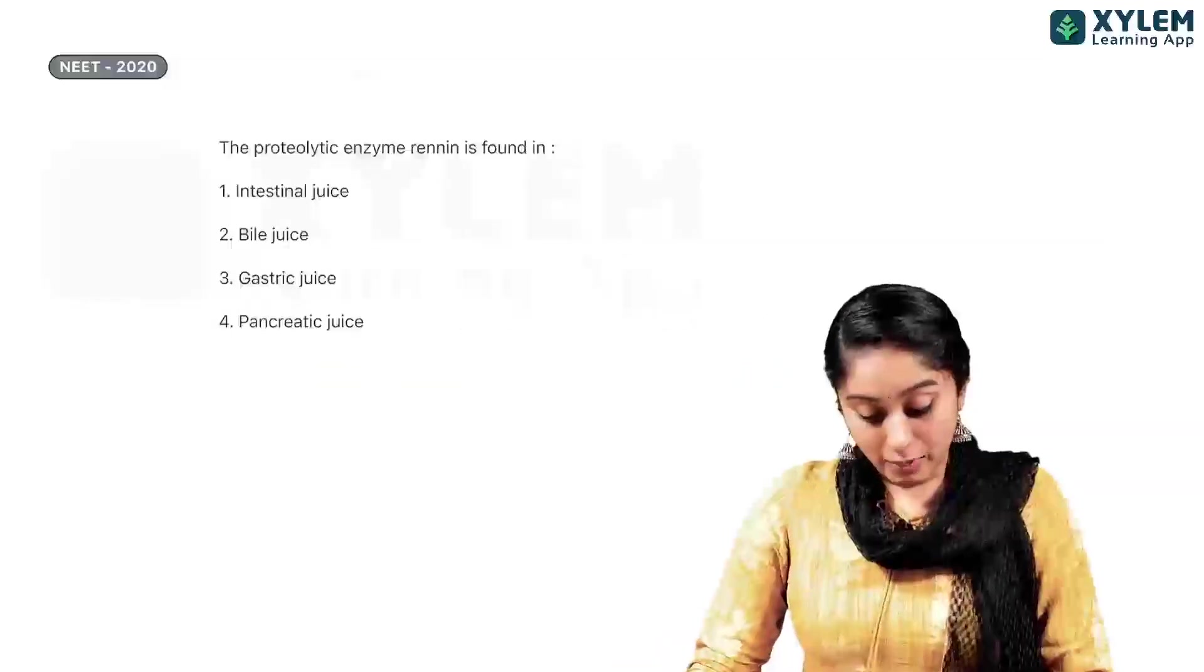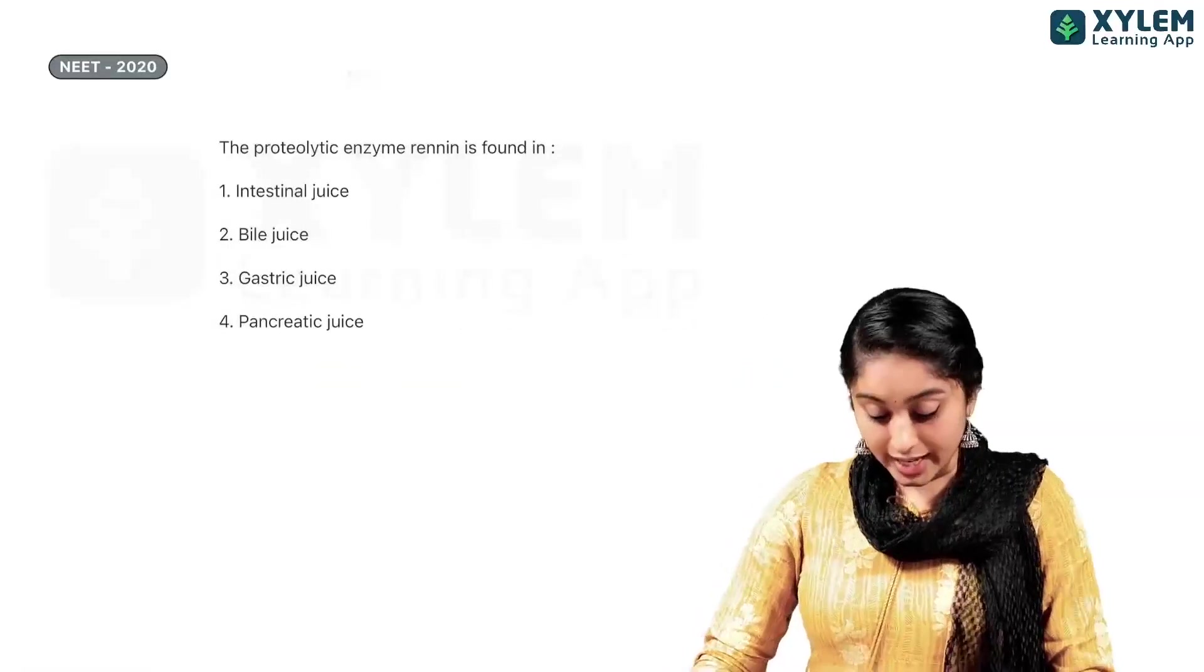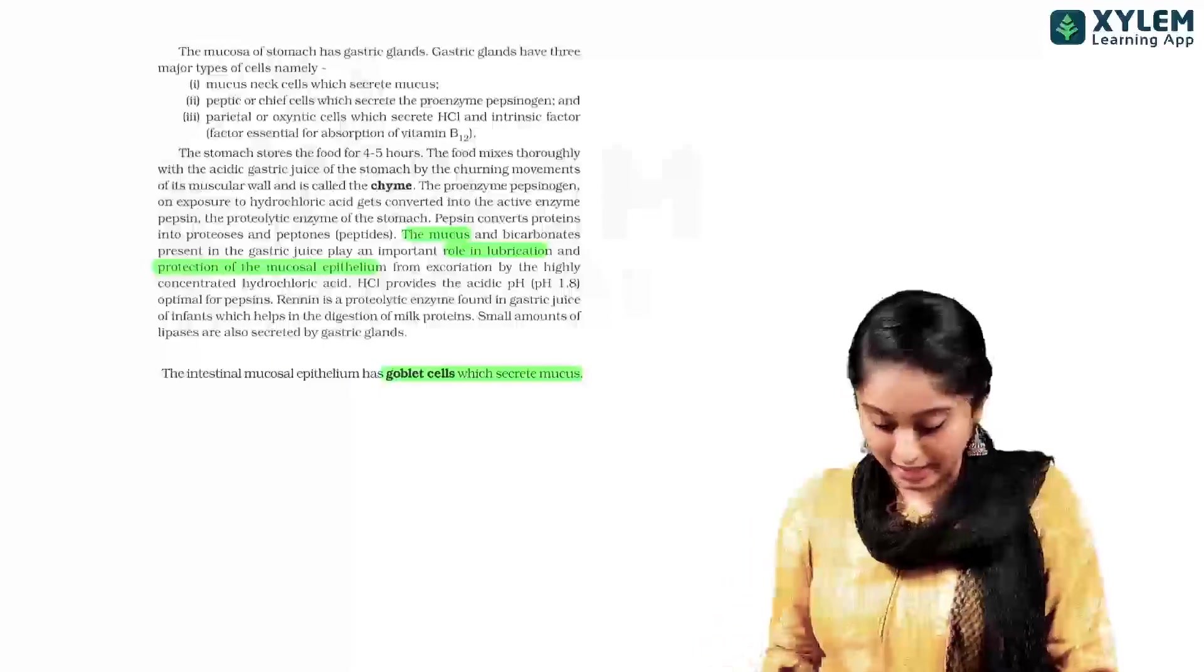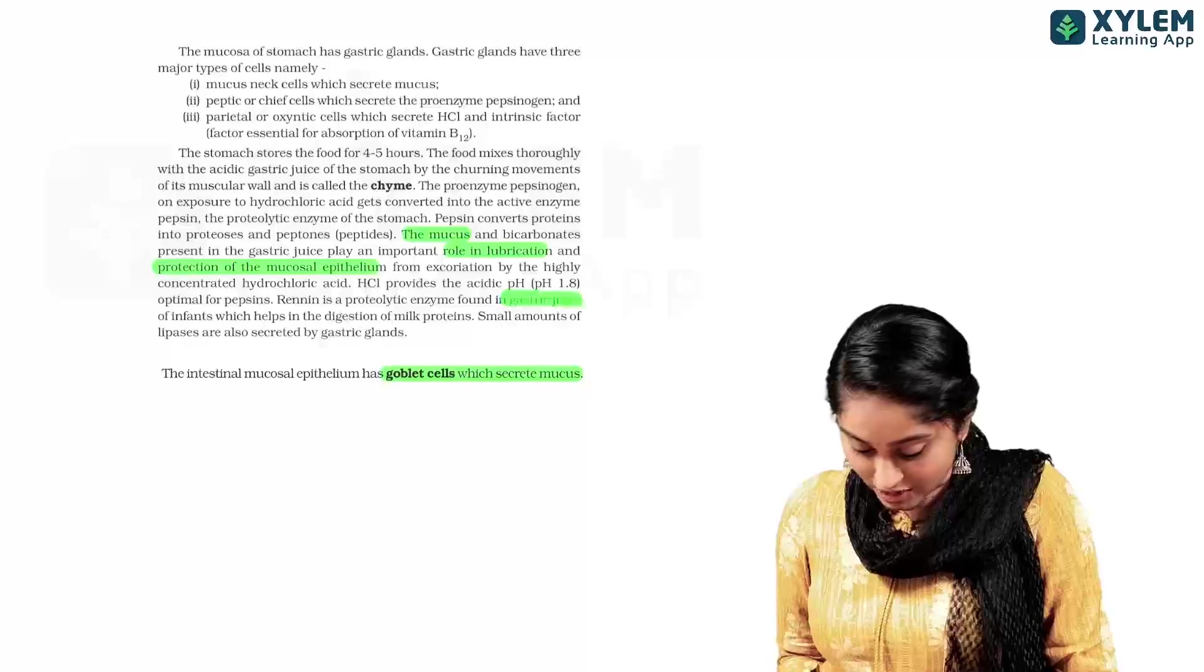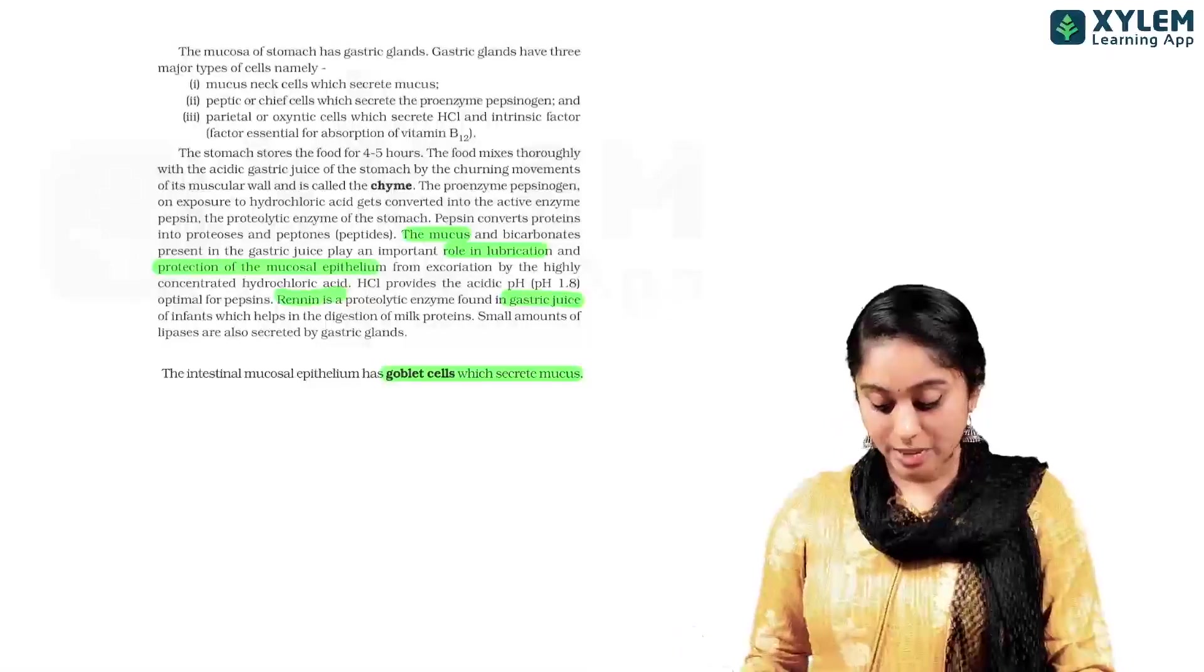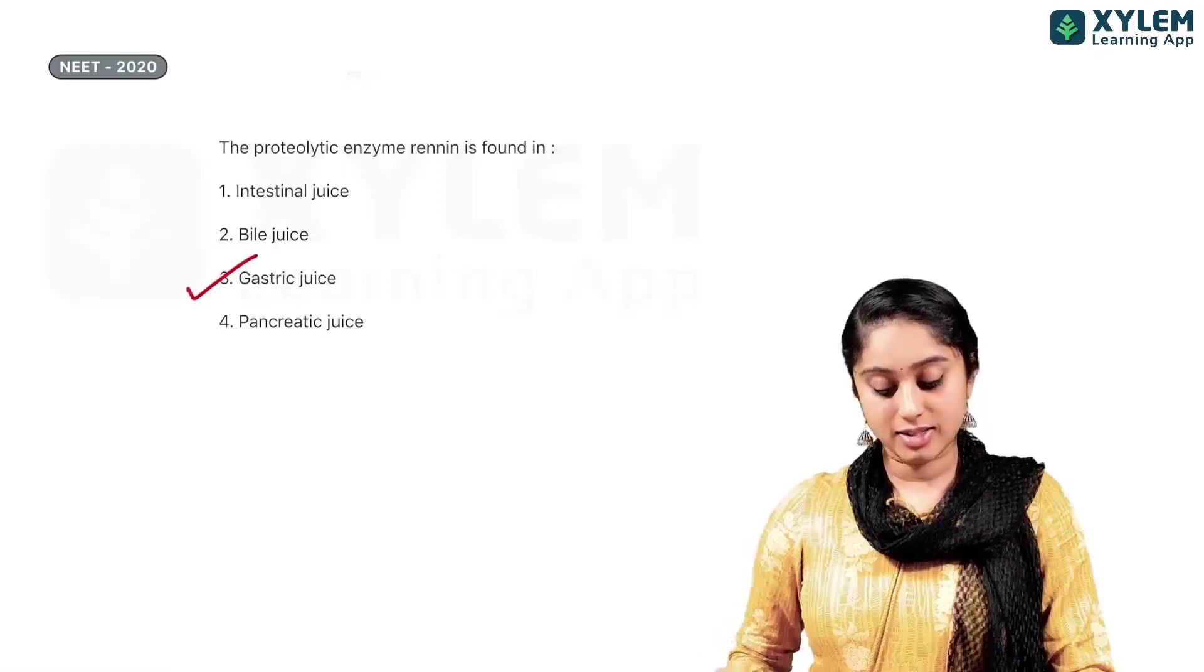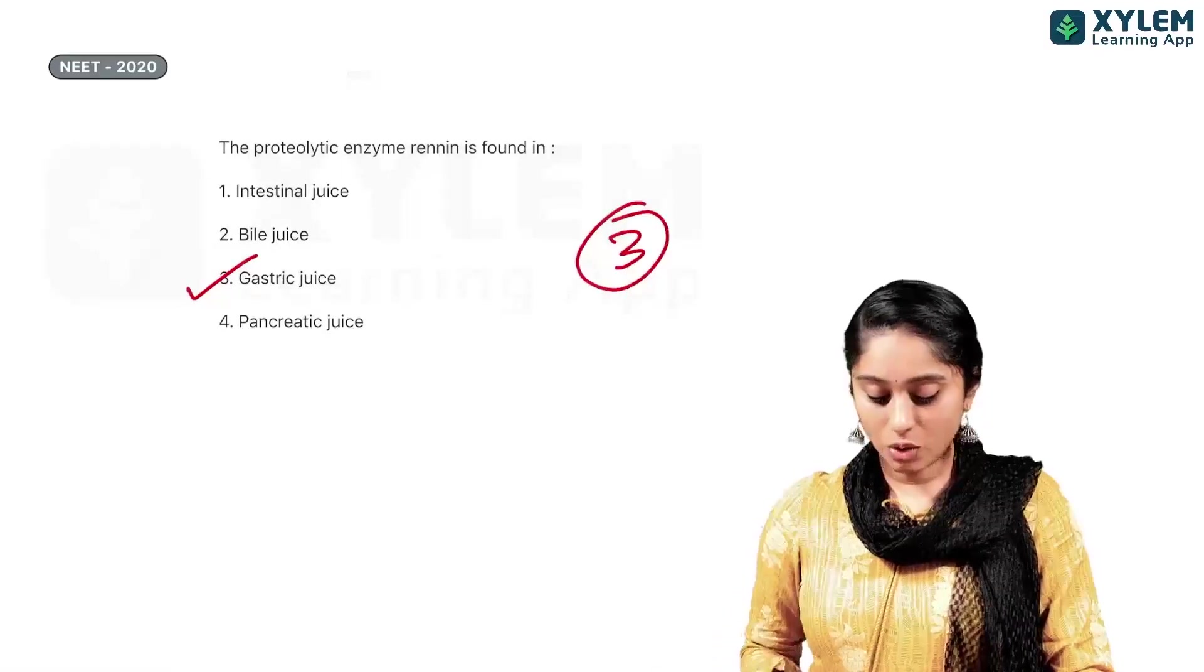Okay. Now, coming to a question that appeared in 2020, the proteolytic enzyme, rennin, is found where? If you know, directly, rennin is a gastric juice. Correct. It is a proteolytic enzyme found in gastric juice. Now, straight away, my answer is, 3.